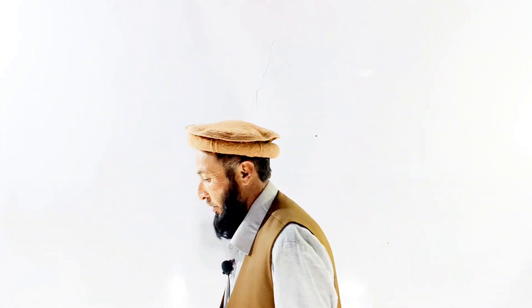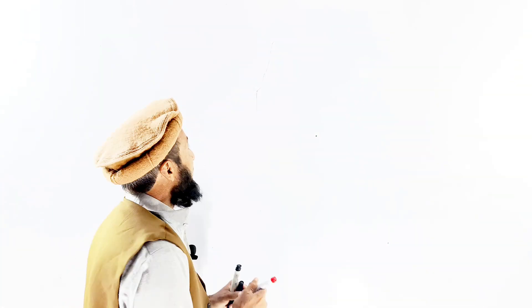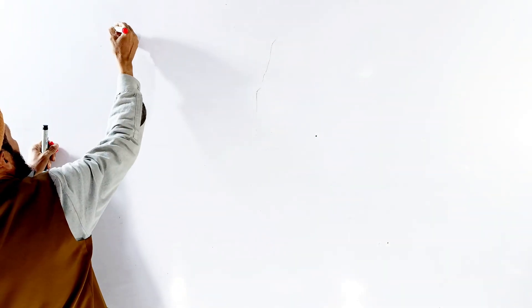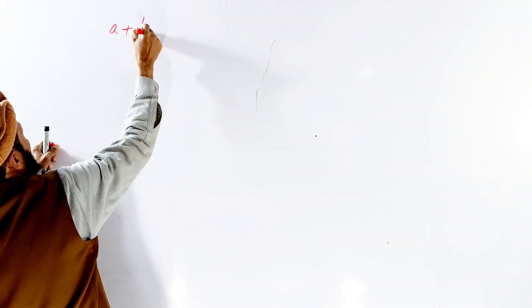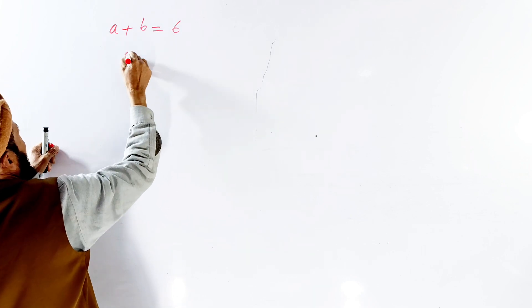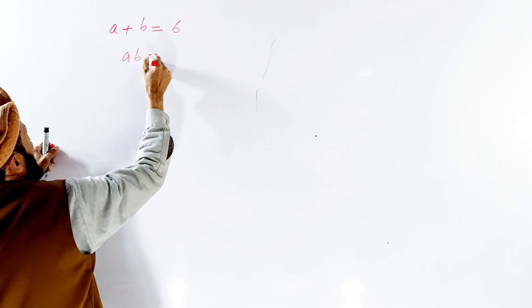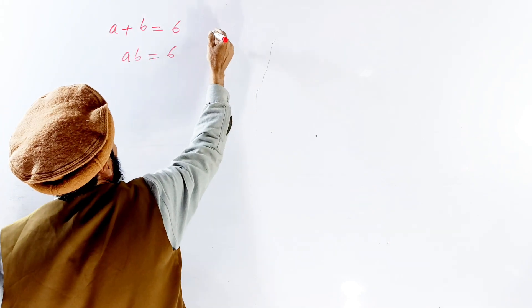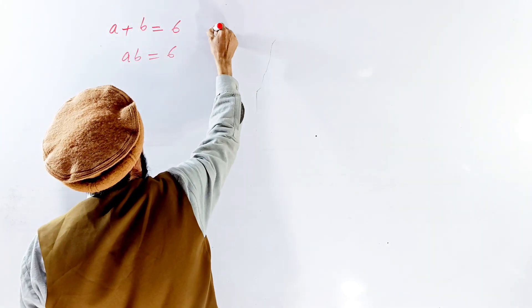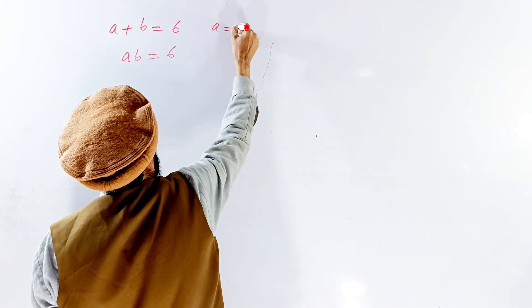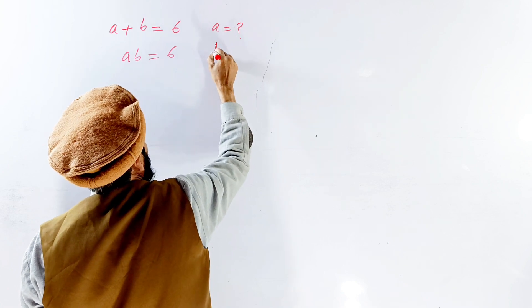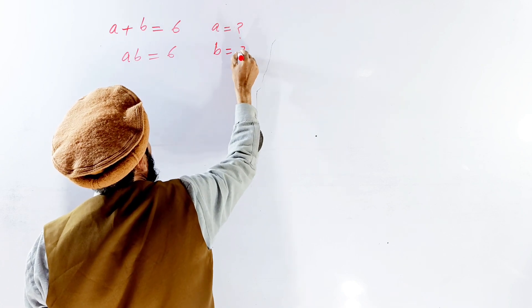Welcome, all you are India students. We have a new question for you today. This question is a very interesting question. Let's consider A plus B. A plus B is equal to 6 and AB is equal to 6. How we calculate A and B — both are unknown.